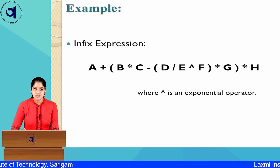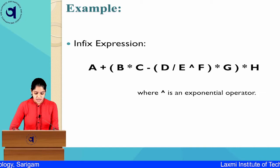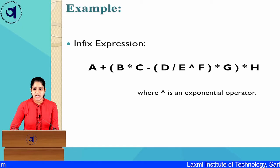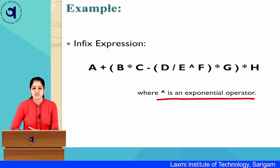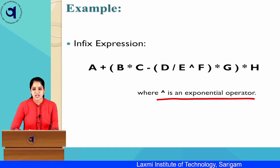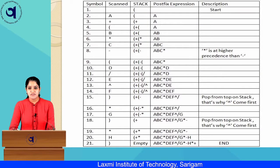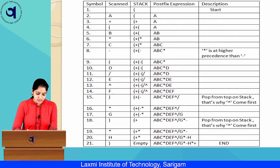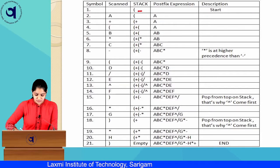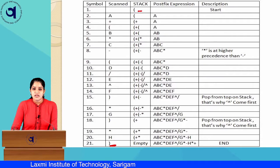Now let us look at a more complex example: A plus bracket B star C minus bracket D slash E cap F bracket close star G bracket close star H. Here, cap represents the exponential (power) operator. We add an opening bracket to the stack and a closing bracket to the end of the expression X.